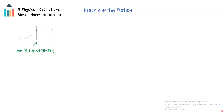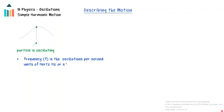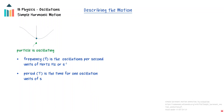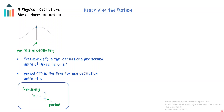An oscillation is a type of motion that repeats periodically. The frequency of the motion is defined as the number of oscillations that occur per second and has the units of hertz, which is the equivalent of one over a second. The period of the motion is the time it takes to complete one oscillation. Period has the units of seconds. The frequency and the period are inverses of each other.